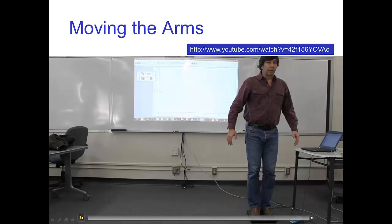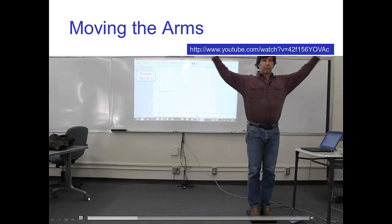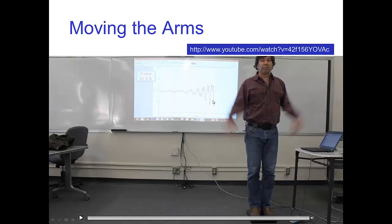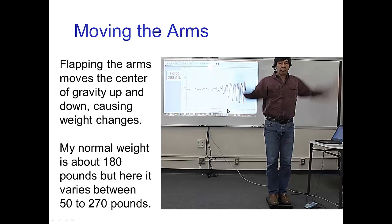In the next example, I'm raising and lowering just my center of gravity by flapping my arms. Watch the screen in the back — you can see how my weight is varying up and down as I'm flapping my arms. My normal resting weight is about 180 pounds, but these weight changes go all the way down to about 50 pounds and up to about 270 pounds, simply by raising or lowering my center of gravity by flapping my arms.